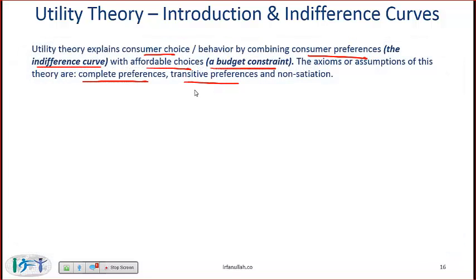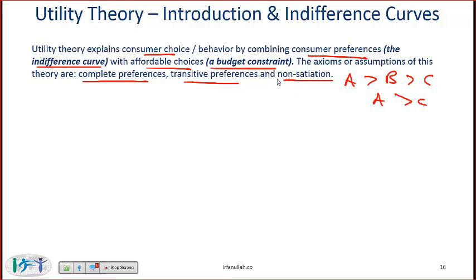Transitive preferences means that if a consumer prefers A over B and B over C, then the consumer will prefer A over C. And non-satiation means that for the consumer, more is always better.